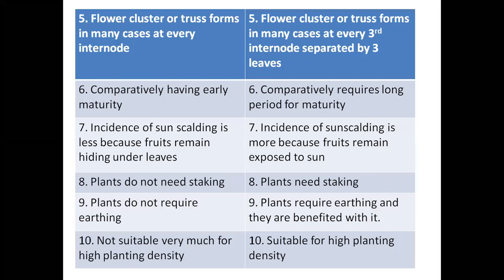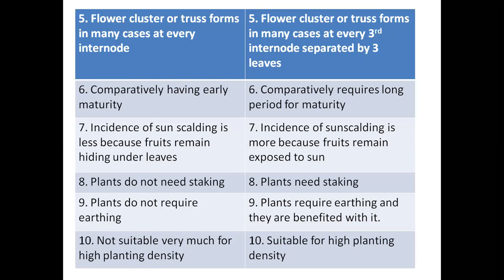Incidence of sun scalding is less in determinate types because the plant is self-topping, short, and bushy — more laterals means more shade, so fruits remain covered by leaves. In indeterminate types, incidence of sun scald is more because the plant grows taller with less vegetative cover, so fruits are more exposed to the sun. Sun scald means direct sunlight falls on the fruit, causing it to not mature properly — it becomes hard, yellow, and doesn't ripen well.